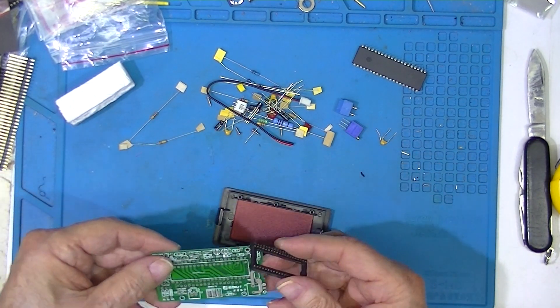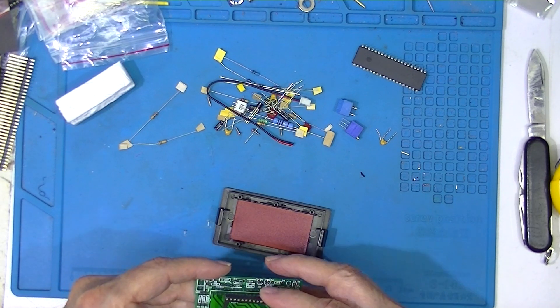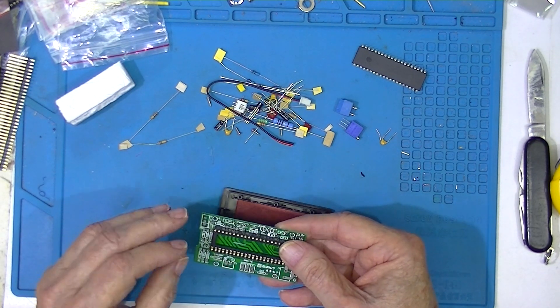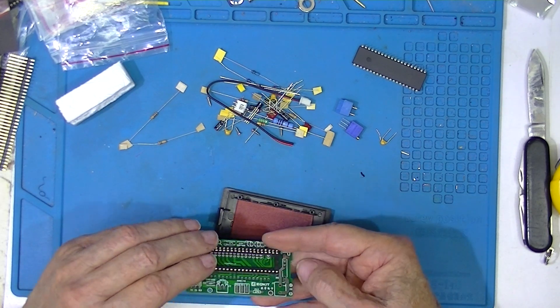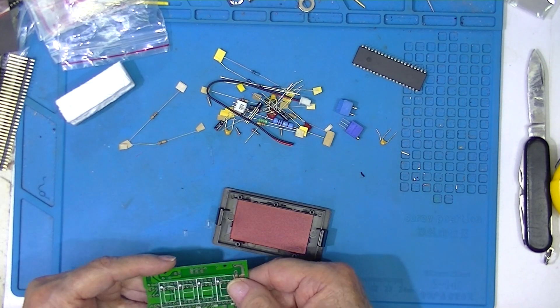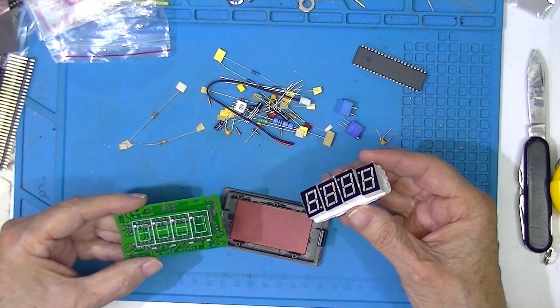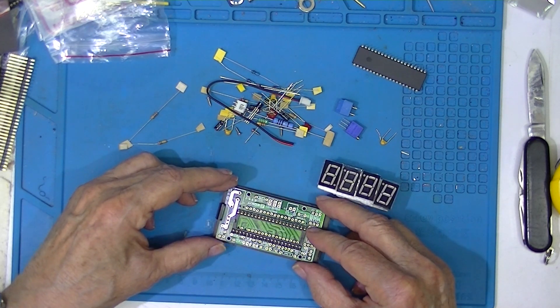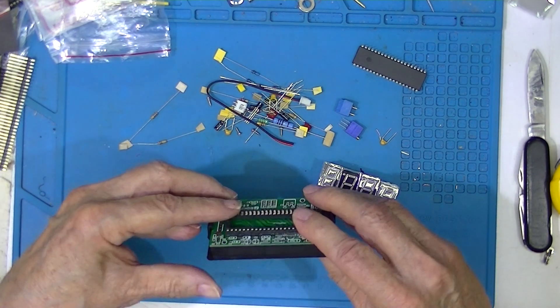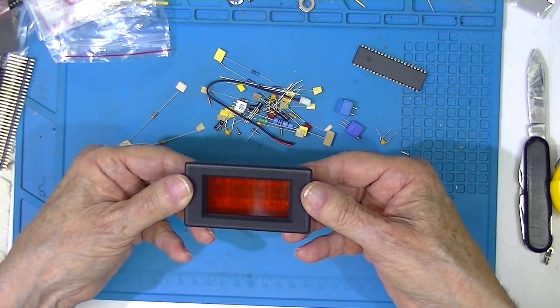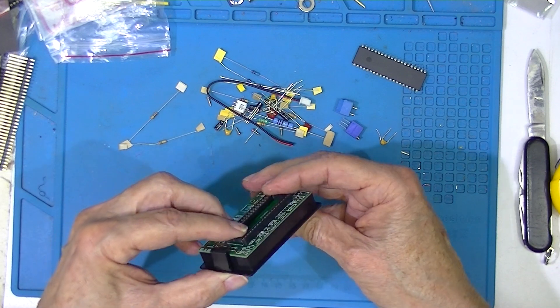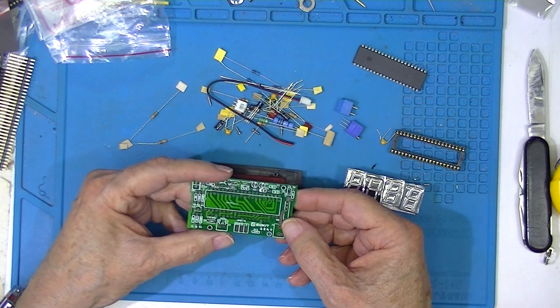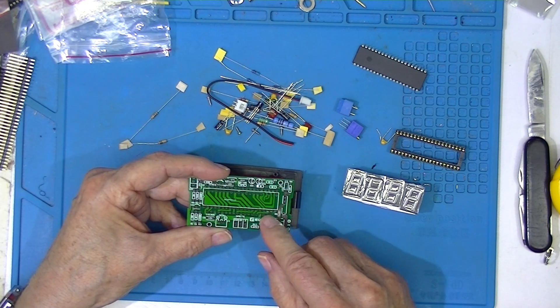The socket obviously will go in one side, and on the reverse side will go these four displays. Then that entire thing will fit in this bezel. The only thing that would be soldered on this side of the board is these displays.